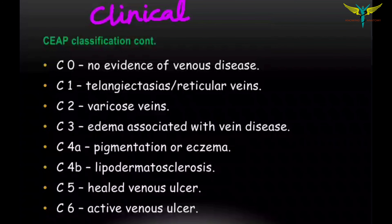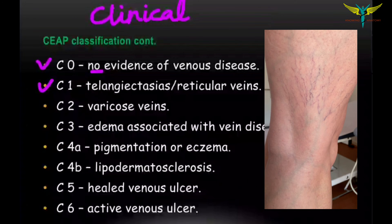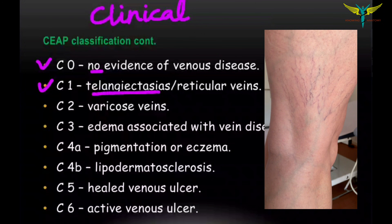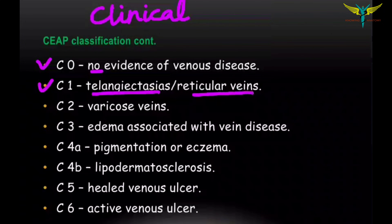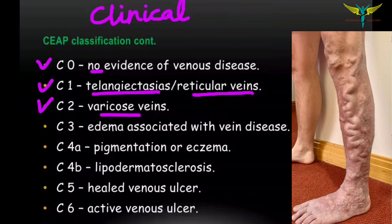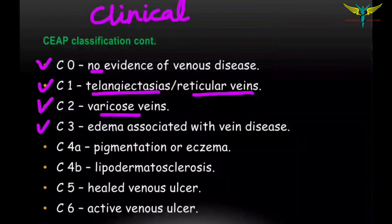Clinical classification: C0 means there is no evidence of venous disease. C1 — there are telangiectasias or reticular veins present. C2 — presence of varicose veins. C3 — there is edema associated with the venous disease.